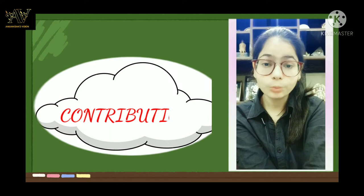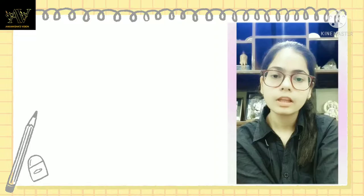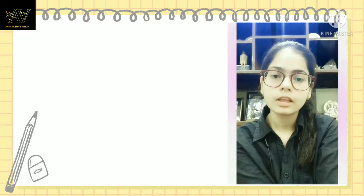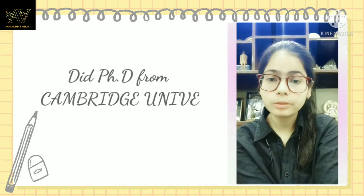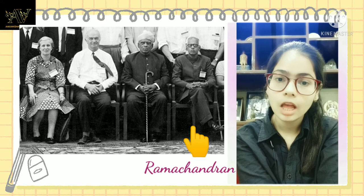His analysis of the allowed conformations of proteins through the use of the Ramachandran plot was ranked amongst the most outstanding contributions in structural biology. Ramachandran did his PhD from Cambridge University, and when he was at Cambridge, he met Linus Pauling. Ramachandran was deeply influenced by Linus Pauling's publication on models of alpha helix and beta sheet structures.